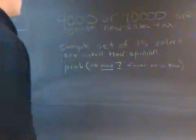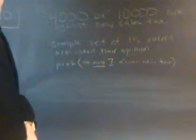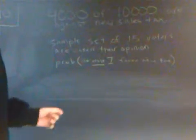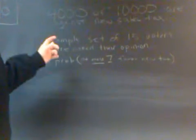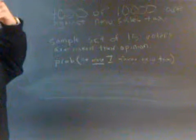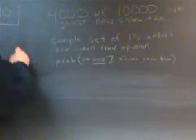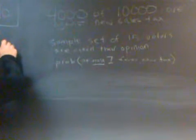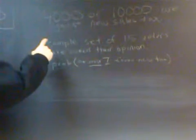So 4,000 of 10,000 people are against the new sales tax. And we're supposed to have a sample set of 15 voters where we take the 4,000 and 10,000 because they're much larger numbers and we create a probability.